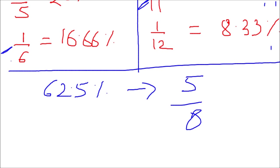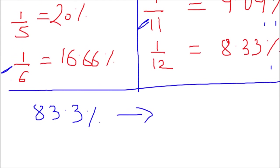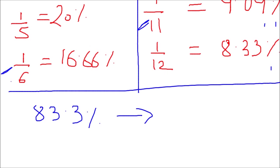Let me take another example. Suppose I'm given 83.3% and I want to find the ratio. I go back and see which fraction gives a decimal of .3 — that's 1/12, which gives 8.33%. If I multiply by 10, I get 83.3%. So the answer is 10/12.